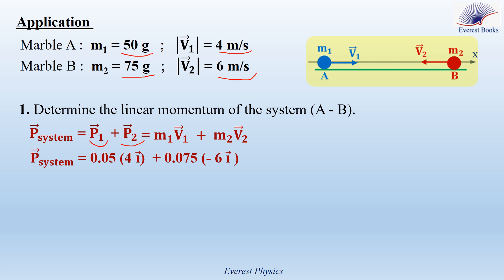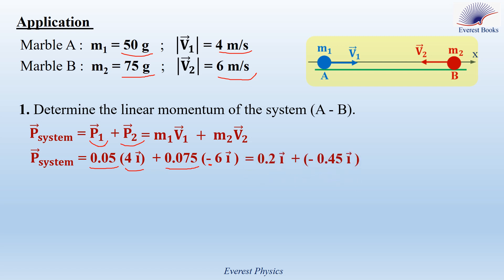Substituting: P1 equals M1·V1 equals 0.05 times 4i, and P2 equals M2·V2 equals 0.075 times (−6i), since marble B moves in the negative direction. P_system equals 0.2i minus 0.45i. Finally, we get P_system equals −0.25i kilogram meters per second.